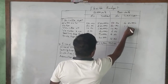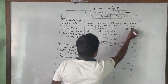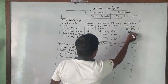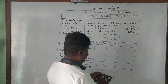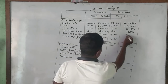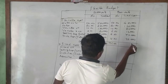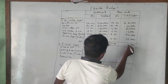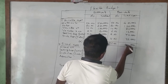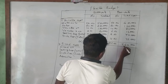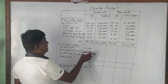For 8,000 units: labor 1,60,000, variable overhead = 80,000, variable selling = 16,000, distribution variable = 8,000 × 9 = 72,000, admin variable = 32,000. Total variable cost for 8,000 units = 7,60,000.